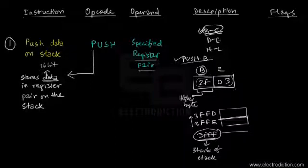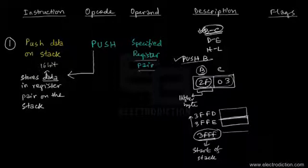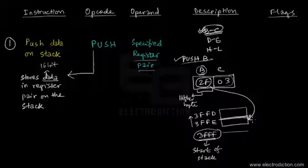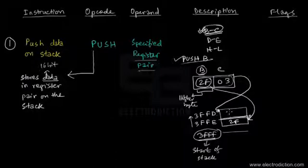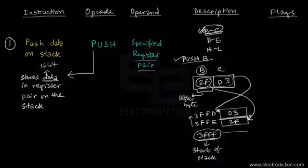When this instruction gets executed, the higher byte present in register B gets stored first at memory location 3FFEH. Then the data byte from register C — which is 03 — gets stored at memory location 3FFDH. This is how the data bytes present in a particular register pair are stored on the stack.